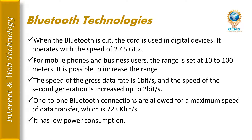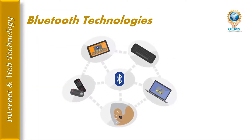Bluetooth operates at a speed of 2.45 gigahertz. The data rate is 1 megabit per second, and the second generation increased this to 2 megabits per second. One-to-one Bluetooth connections allow a minimum data transfer speed of 723 kilobits per second. It has low power consumption. The Bluetooth technology diagram shows Bluetooth connected to multiple devices including a laptop, desktop, keyboard, and mouse.